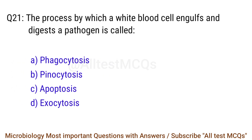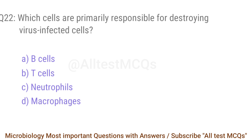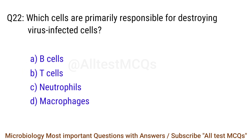Q21. The process by which a white blood cell engulfs and digests a pathogen is called? The right answer is option A: Phagocytosis. Q22. Which cells are primarily responsible for destroying virus-infected cells? The right answer is option B: T cells.